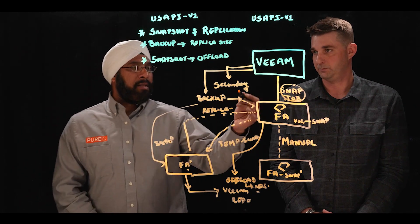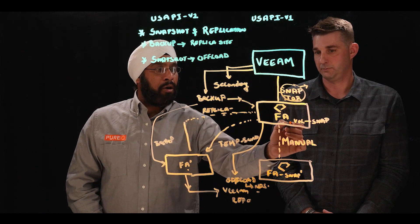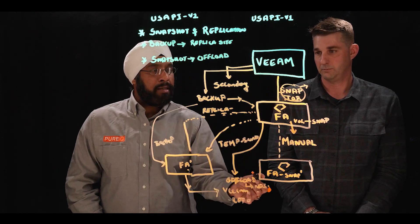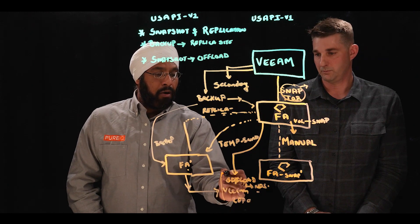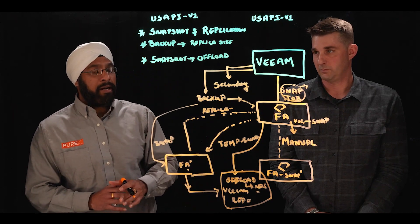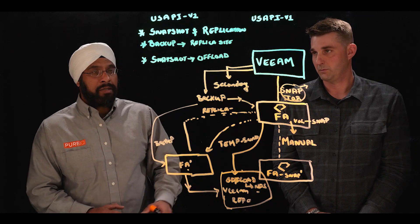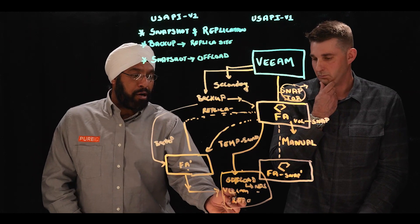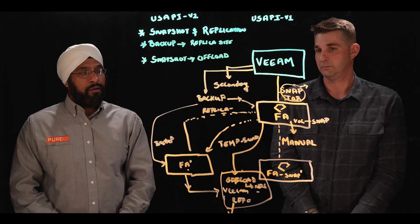Once you have a snap-only job configured on Veeam, it's going to perform a snapshot on the primary array with its own retention time based on your policy. Later on, it will identify the archiving relationship of those volumes on the FlashArray and can push those snapshots to an NFS target for long-term retention or archival purposes for years. In case of any disaster scenario, you have a path for recovery from the offload target. This is how simply you can configure the offload job.